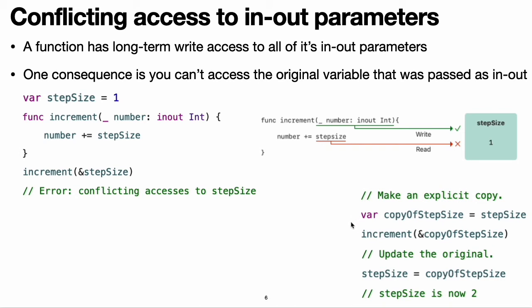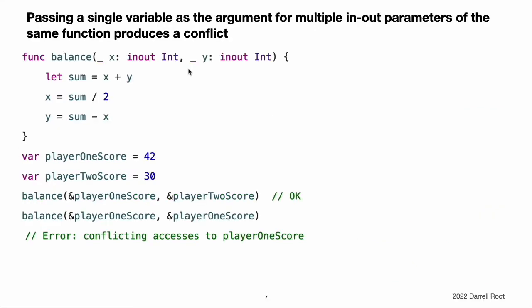One way to solve this conflict is to make an explicit copy of stepSize. When you make a copy of stepSize before calling increment, it is clear that the value of the copy of stepSize is incremented by the current step size. The read access ends before the write access starts, so there is not a conflict. Another consequence of long-term write access to in-out parameters is that passing a single variable as the argument for multiple in-out parameters of the same function produces a conflict.